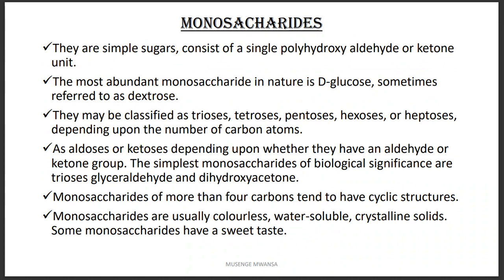Monosaccharides are named depending on the number of carbon atoms they have — as either trioses, tetroses, pentoses, hexoses, or even heptoses. They can also be classified as aldehydes or ketones, so there can be aldose sugars or keto sugars.